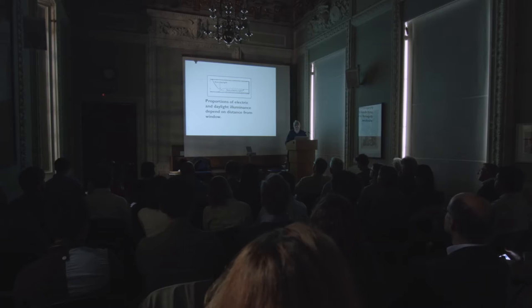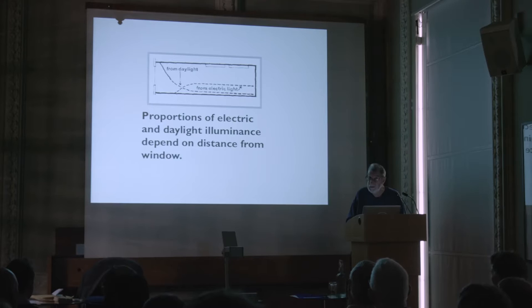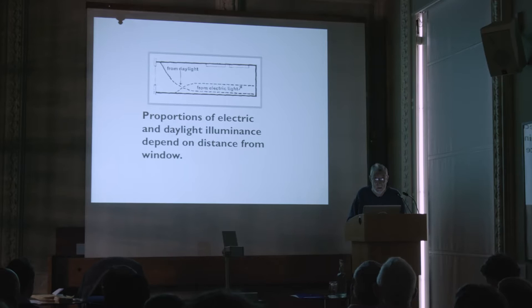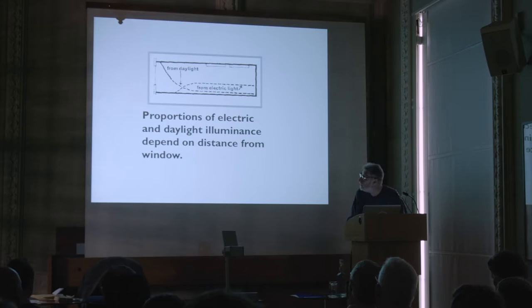Should the electric lighting be trying to match the color rendering properties of the tinted glass or not? And if the daylight through the tinted glass has poor color rendering properties, is there any sense in using electric lamps which have a color rendering index of greater than 90? Questions like that we can't even address unless we have some way of quantifying the color rendering properties of the glass.